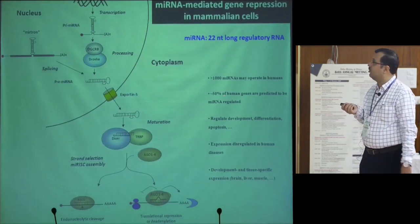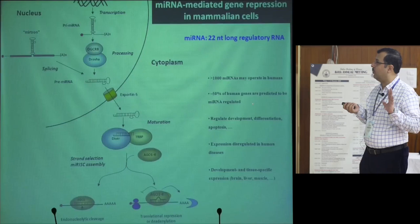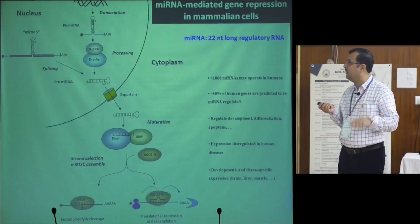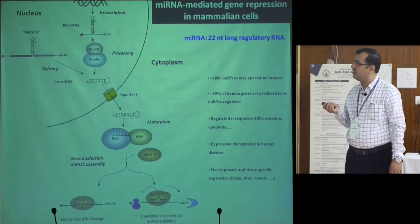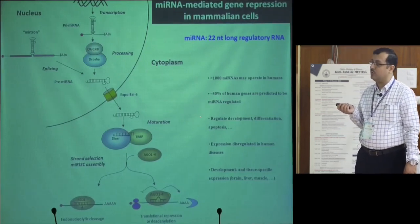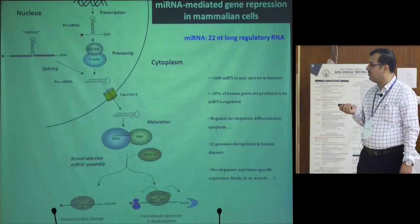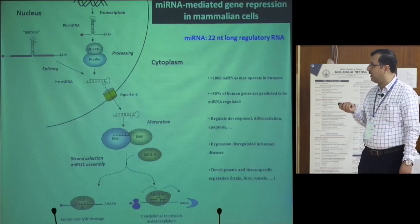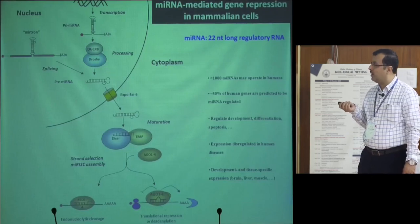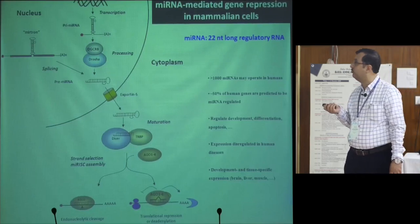There are more than a thousand microRNAs operating in humans, and almost half of the genes we encode are microRNA controlled. They regulate different stages of development, differentiation, apoptosis, and almost all biological processes. Their expression is dysregulated in human diseases, and microRNAs show developmental and tissue-specific expression patterns — some are expressed only in the brain, some only in the liver, and so on.